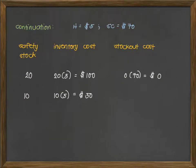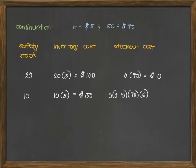So if we keep a safety stock of 10, may chance na maging 70 yung demand, and kapag nangyari yun, we will have a 10-unit short for our stock out. The unit short of 10 is multiplied by the probability of 10% of having a 70 demand, multiplied by the stock out cost, and multiplied by the number of orders per year — which is 6, as stated in the problem. So our stock out cost, if we carry additional 10 units of safety stock, is $420.